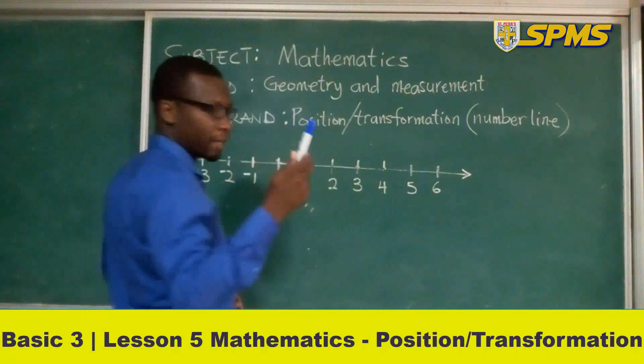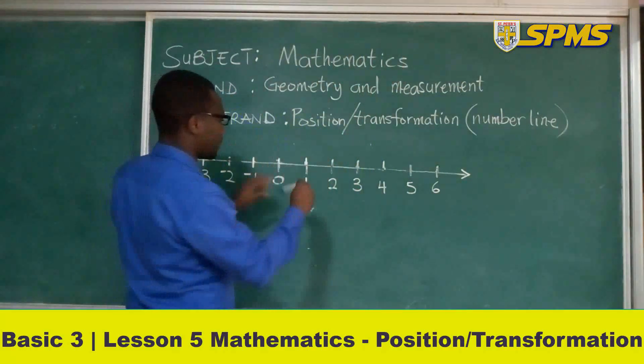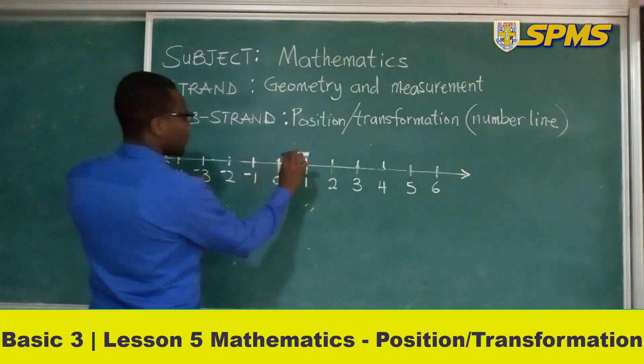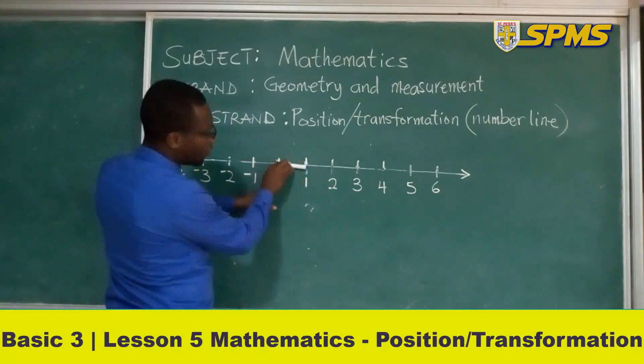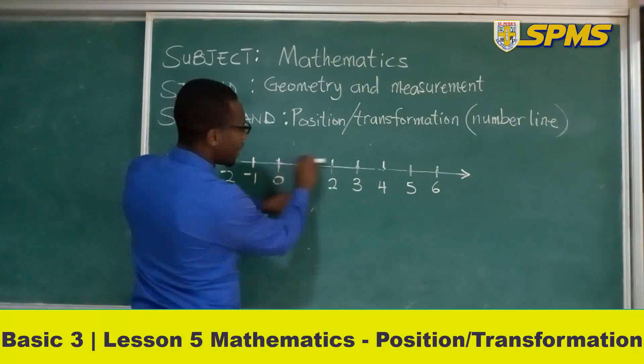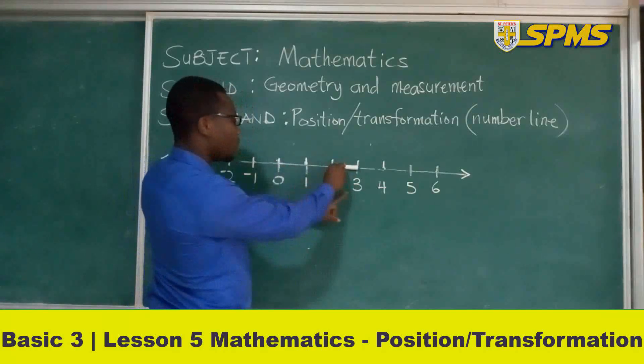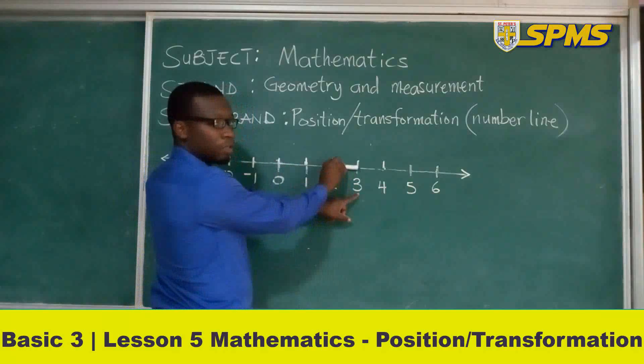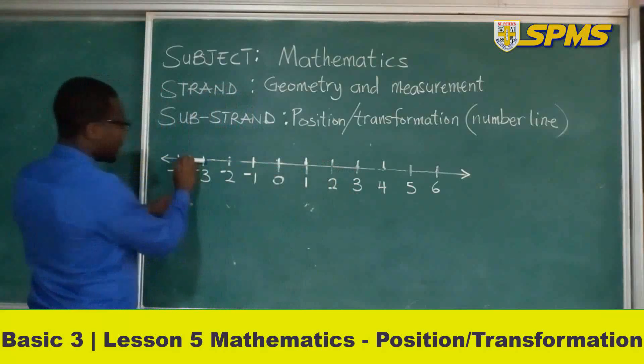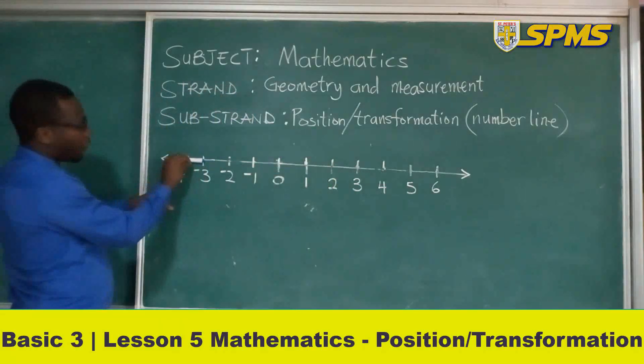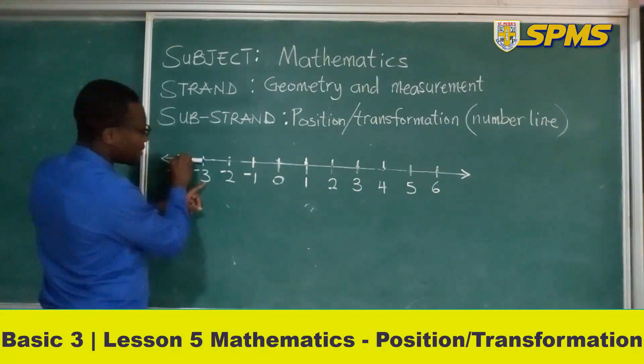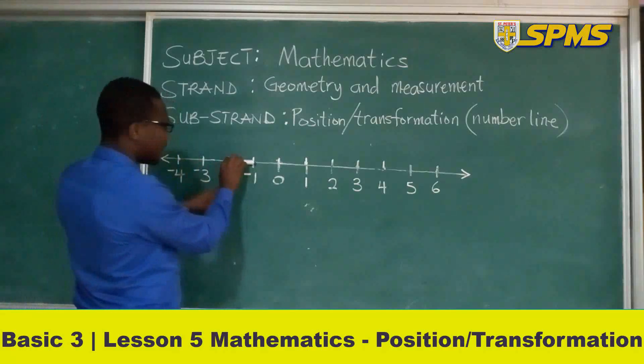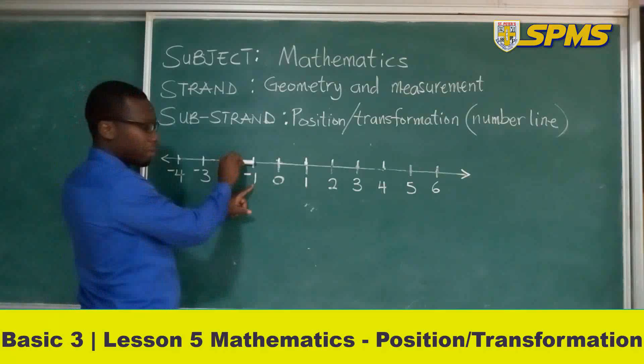Let's use the length of a marker. The distance between negative 4 and negative 3 is the same as the distance between negative 2 and negative 1.